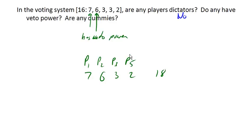And so player 5 is never essential in a coalition. Another way of saying this is that they're never critical in a coalition or in a group. And so player 5 here, the 2, is a dummy in this weighted voting system.